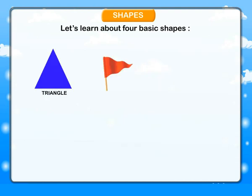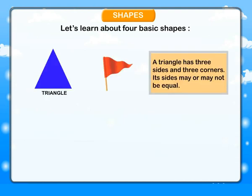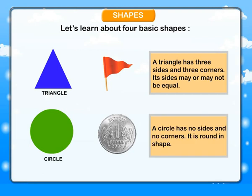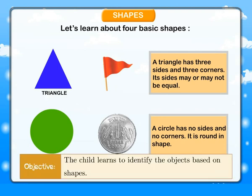Triangle: a triangle has three sides and three corners. Its sides may or may not be equal. Circle: a circle has no sides and no corners. It is round in shape. Objective: The child learns to identify objects based on shapes.